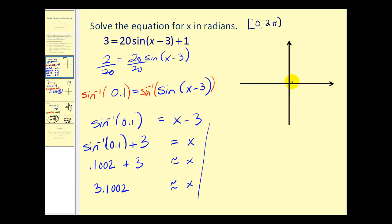Inverse sine 0.1 returned an angle of 0.1002 radians, and this angle would be in the first quadrant. Remember we're trying to solve this equation on the interval from 0 to 2π. Remember that the sine function is positive in both the first and the second quadrant.